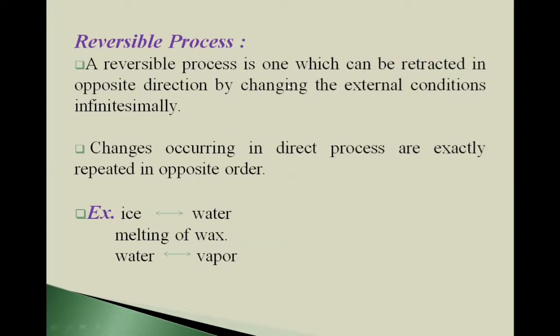A reversible process is one which can be retracted in opposite direction by changing the external conditions infinitesimally. This means changes occurring in direct process are exactly repeated in opposite order.